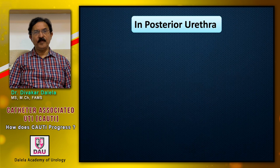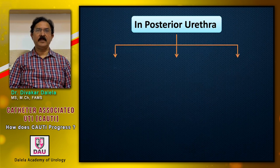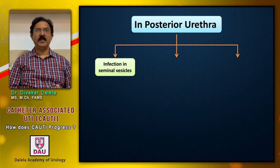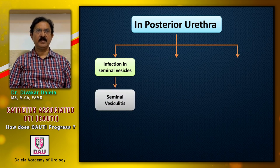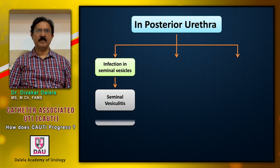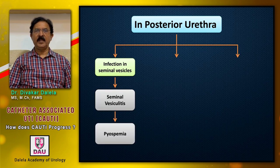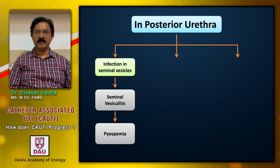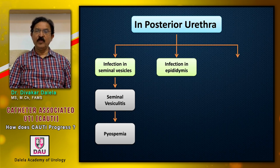In the posterior urethra there are more glands. Infection can ascend into the seminal vesicles — a condition known as seminal vesiculitis. The patient can develop pyospermia, which is pus in the semen, or even hematospermia. The infection can also move into the epididymis of the testis, one or both sides.